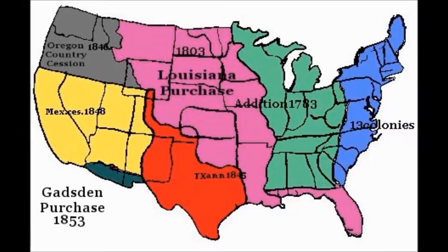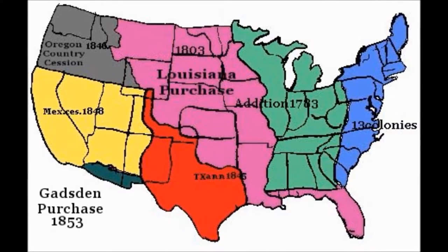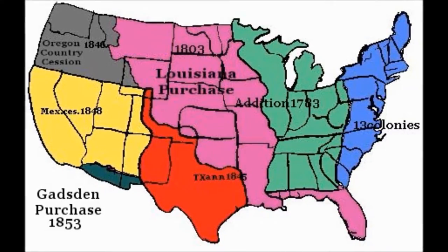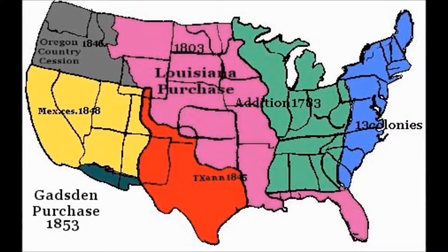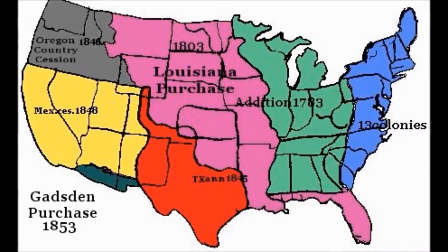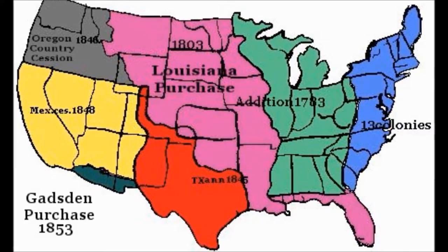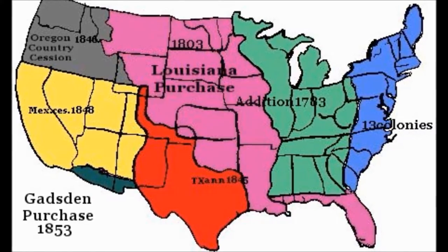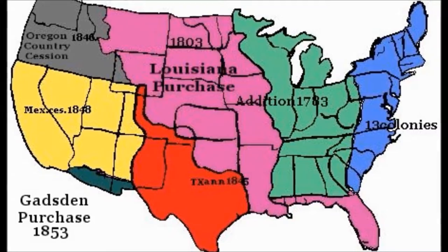Starting with the Louisiana Purchase in 1803, and the exploration of that land by the Corps of Discovery led by Lewis and Clark, eventually led to the movement West. The Louisiana Purchase doubled the size of the United States, and Americans saw this as an opportunity to spread across the North American continent, carrying their culture with them.